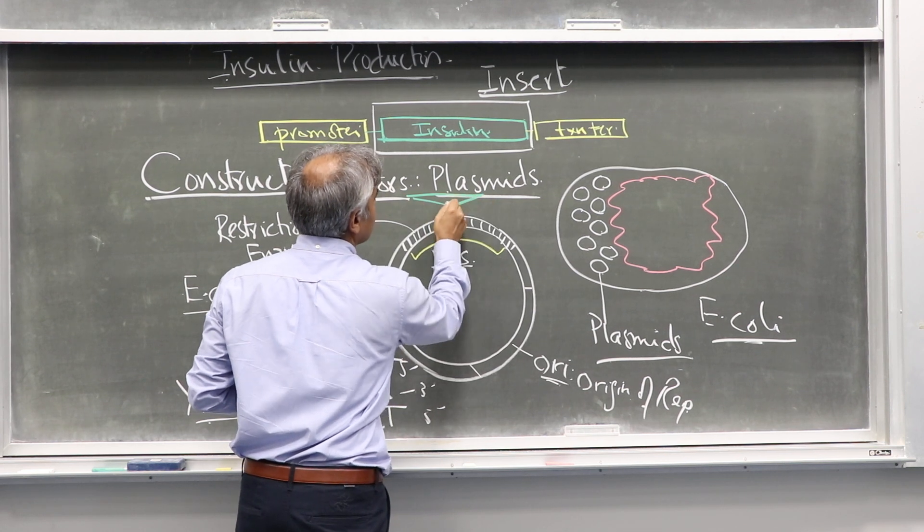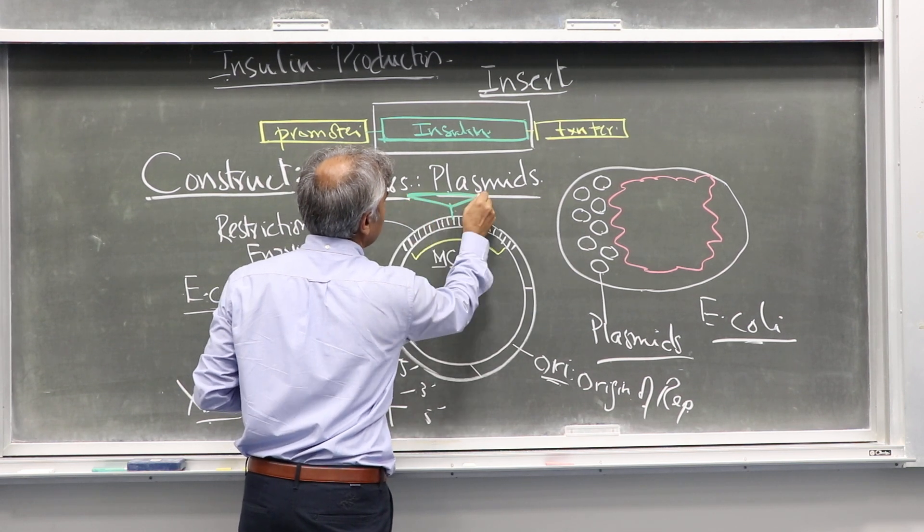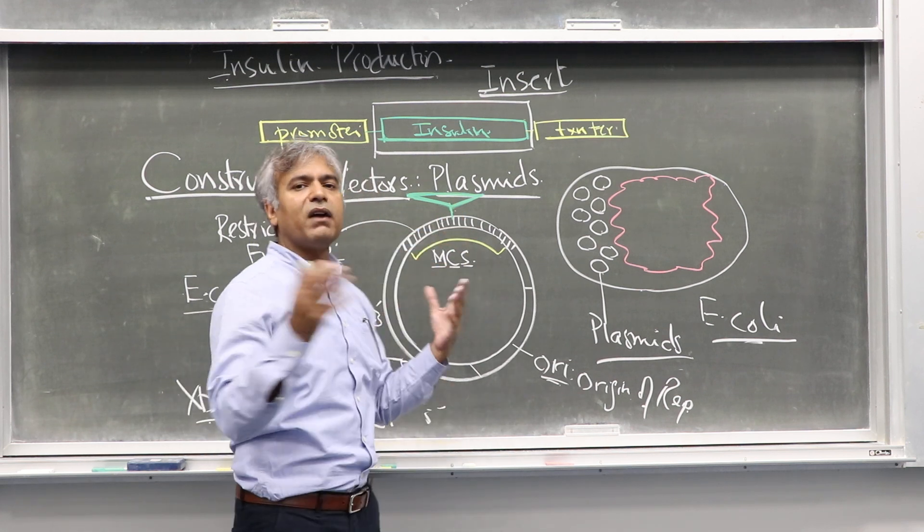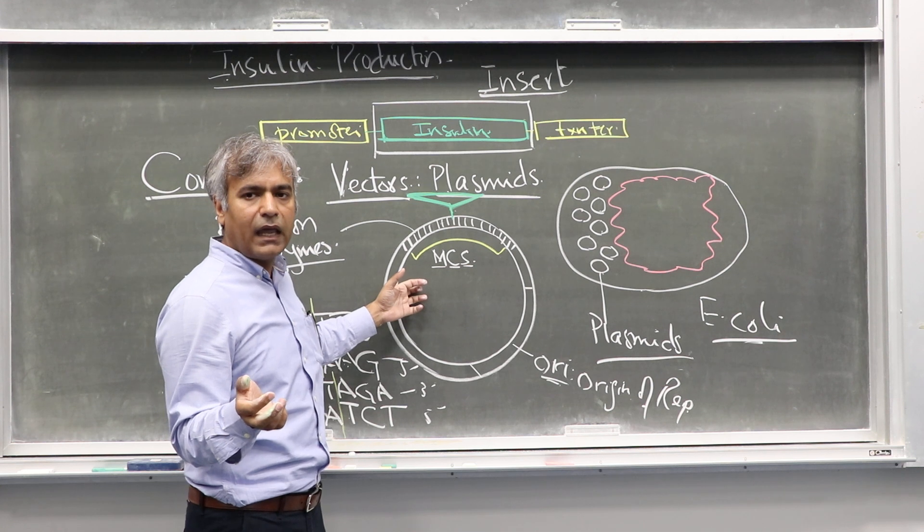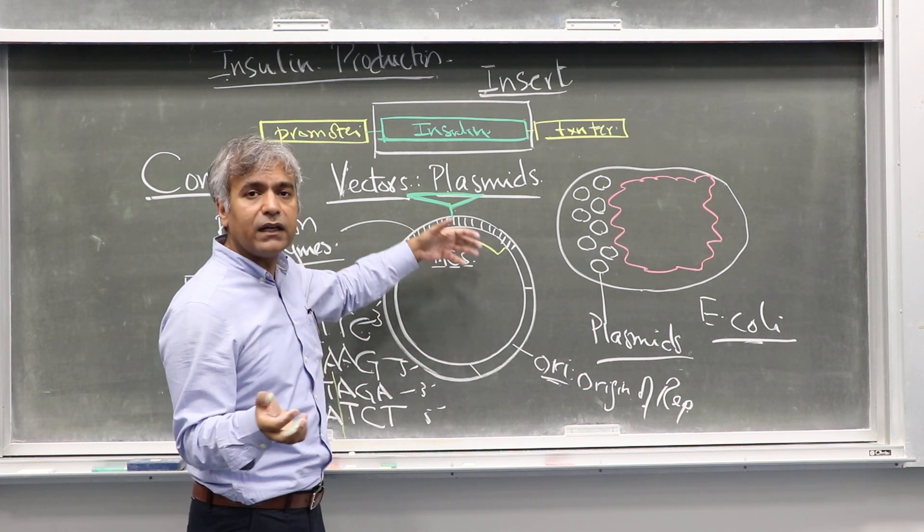This arrow, this green arrow, means this is the place where you have cloned the insulin gene within the vector, and this construct is ready now.